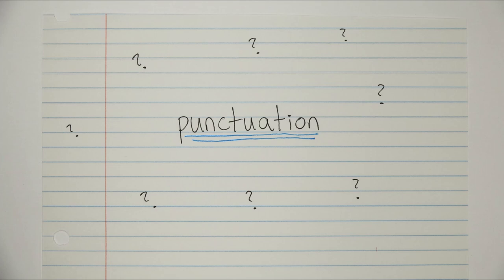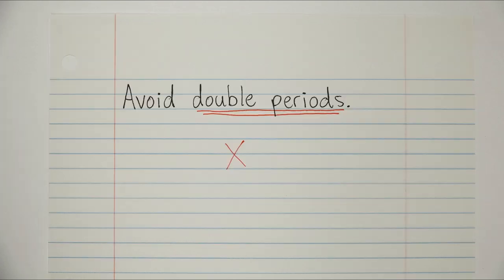Put a period on etc all the time, and just make sure that you never have two periods in a row. So if etc ends your sentence, the period on etc can also be the period of that sentence. Otherwise, you just follow normal punctuation rules.